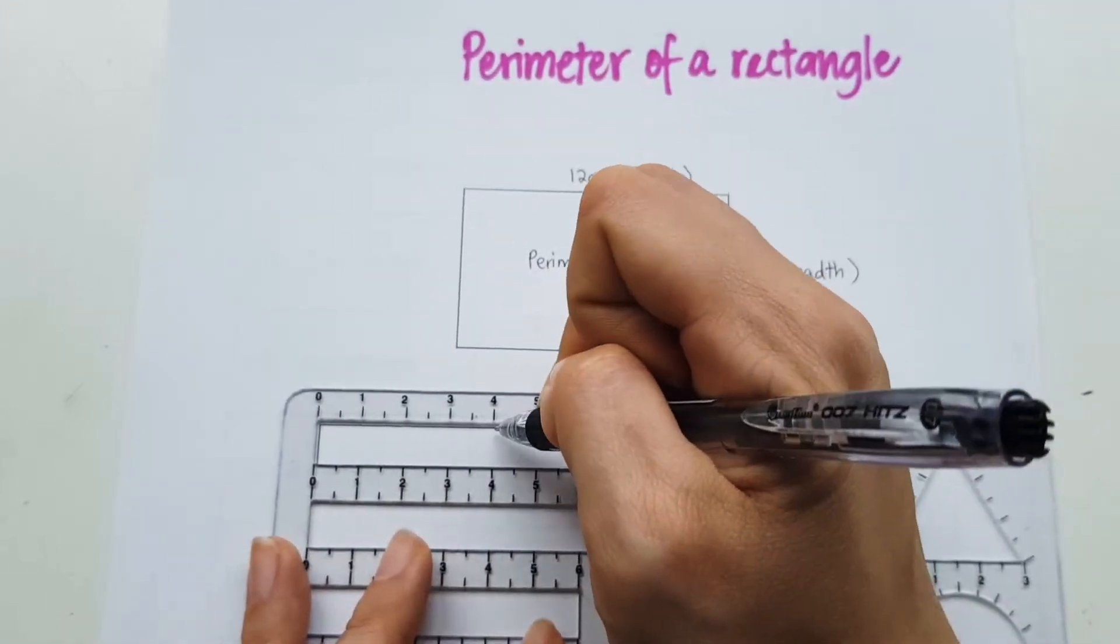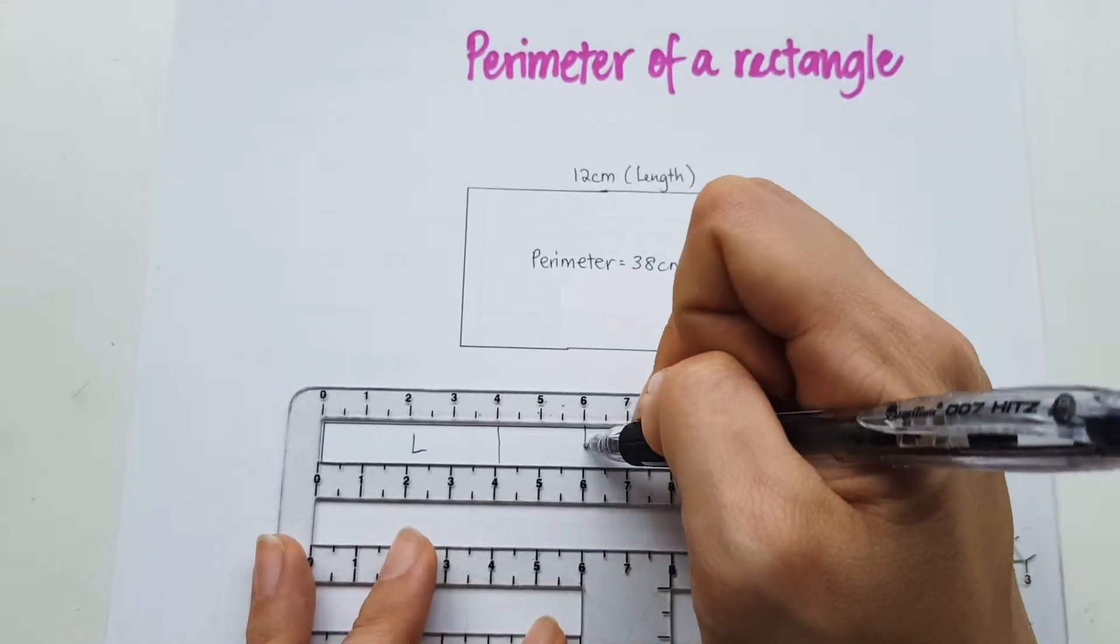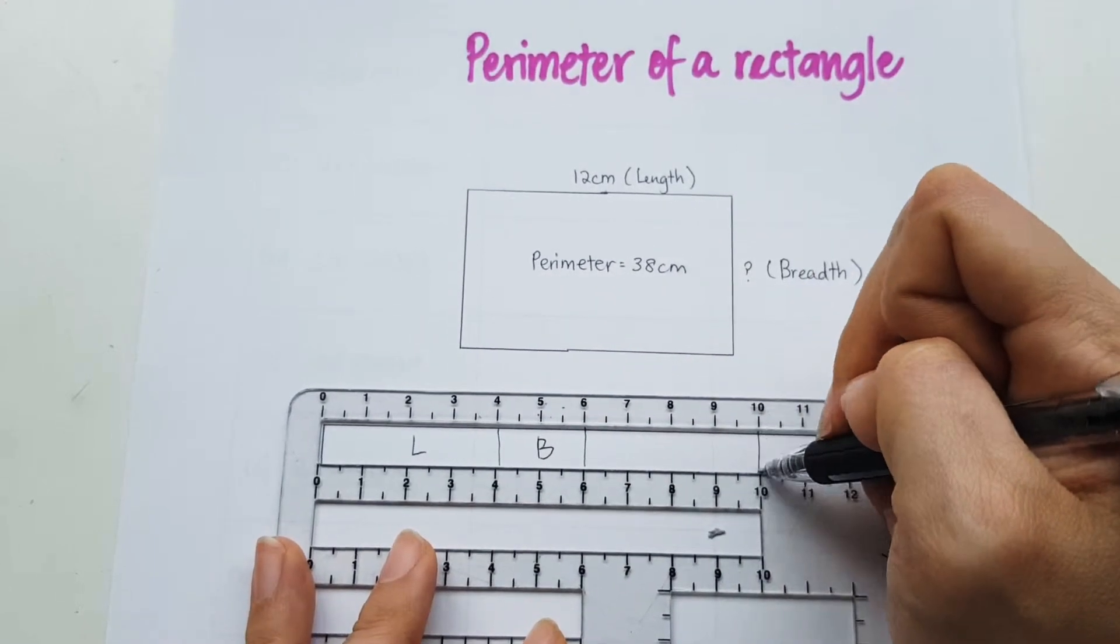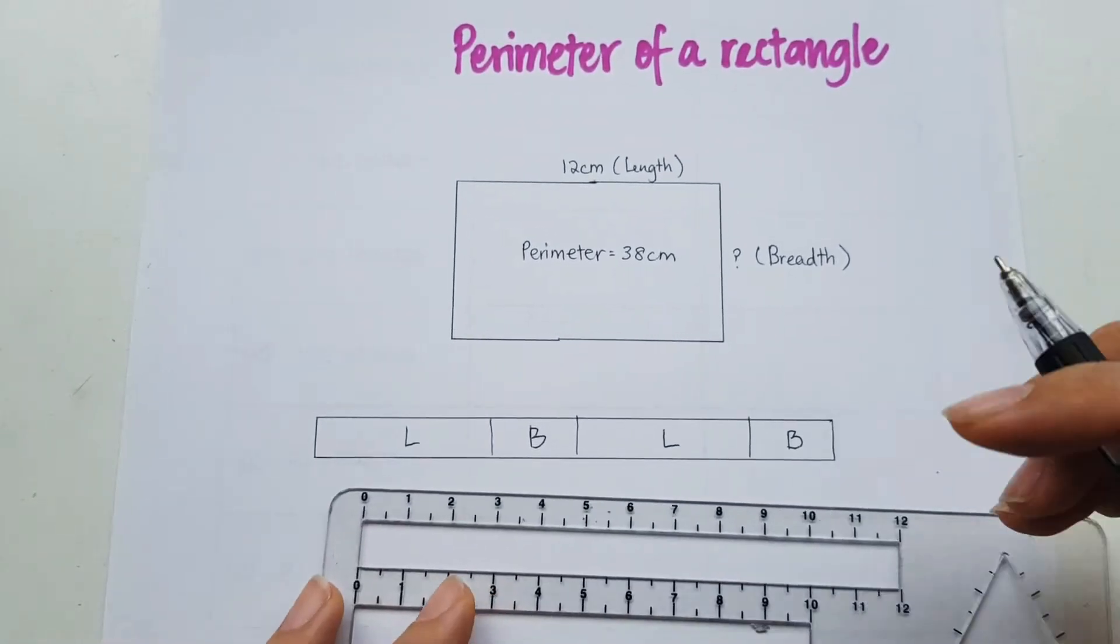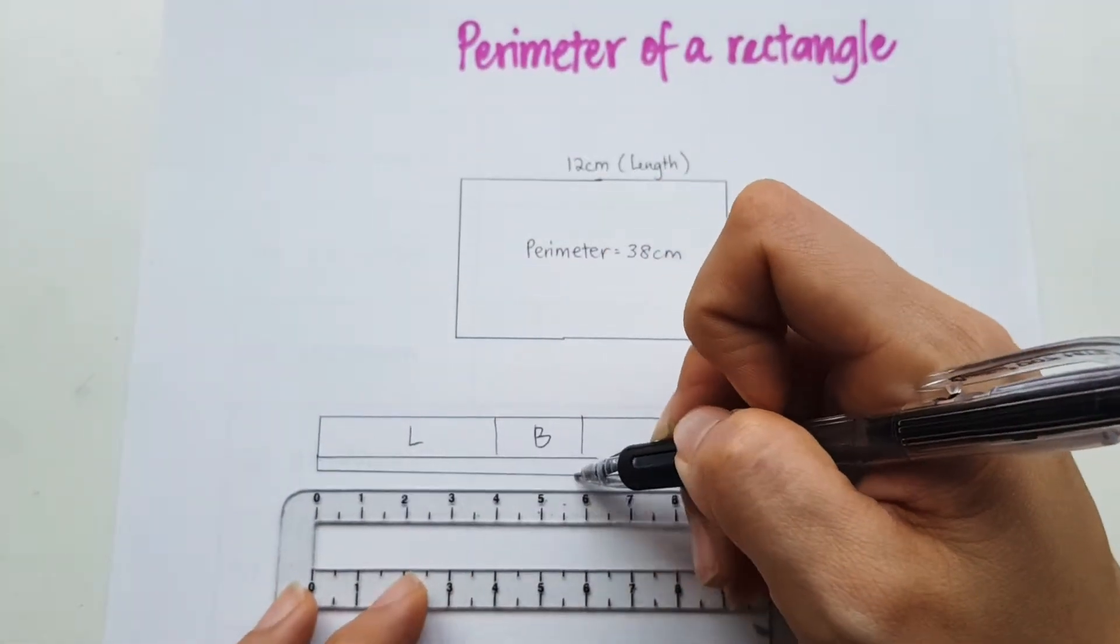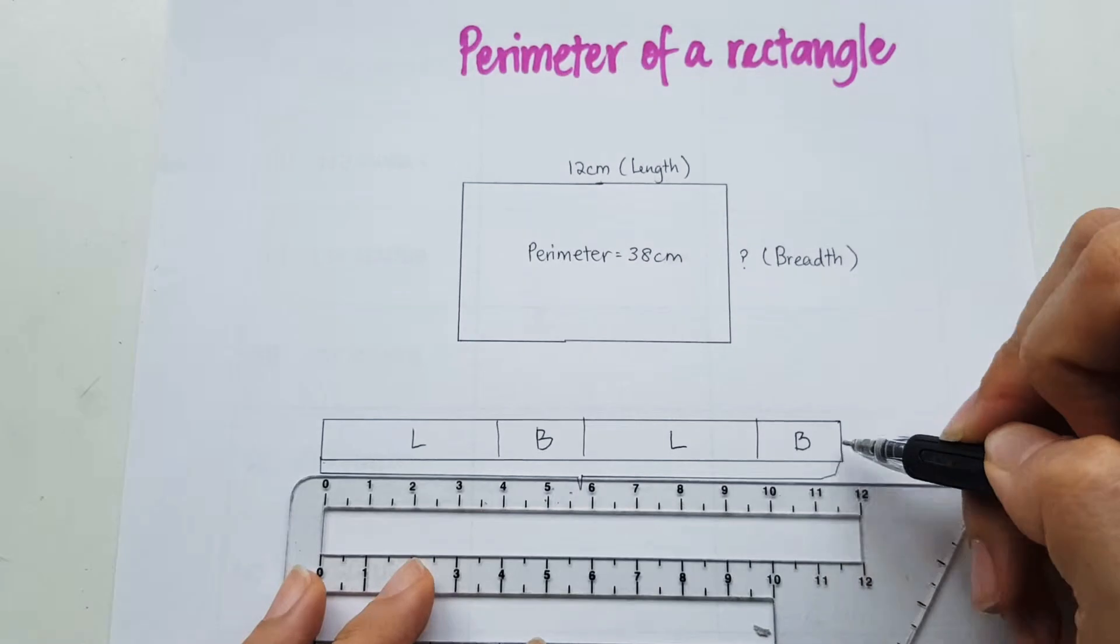So this is what I'm going to do. It's going to be the length, the breadth, the length and the breadth. And this whole thing, I'm going to be labeling it as the perimeter.